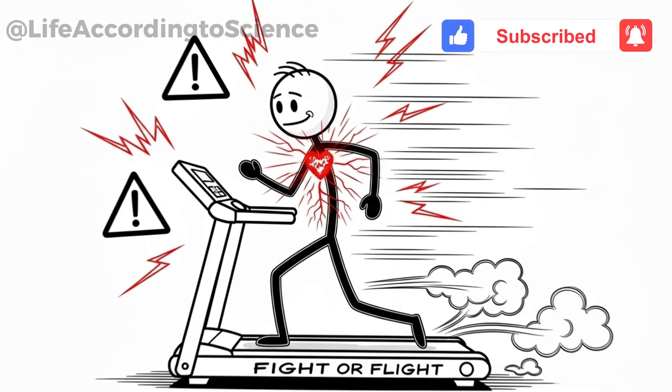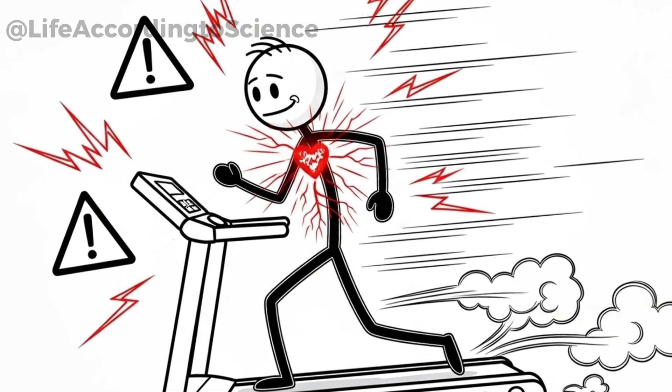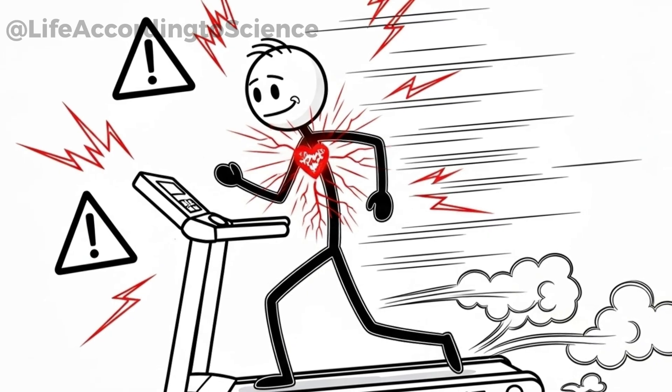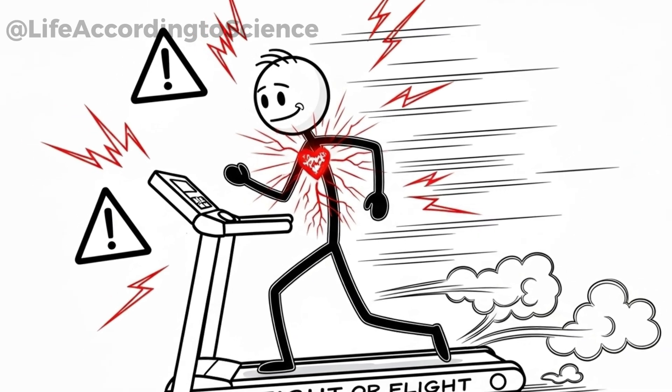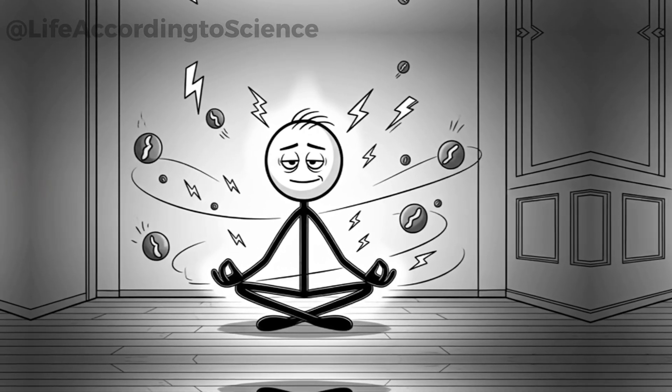But this constant state of overstimulation comes with a cost. The brain is not designed to operate in fight-or-flight mode every single day. Over 30 days, the neural pathways that regulate calmness and balance start to weaken, making it harder to relax even when you want to.